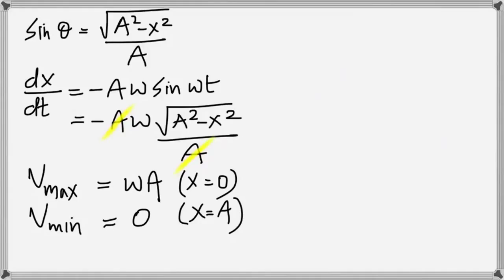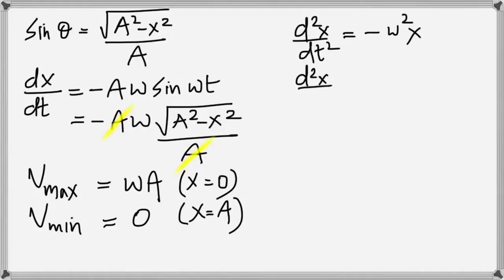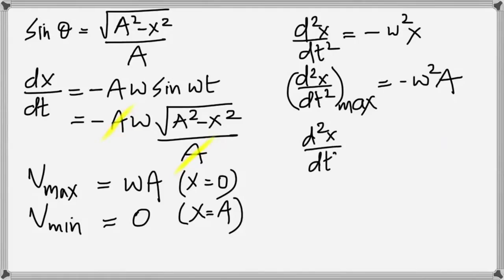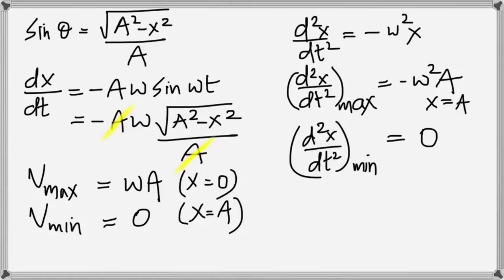For acceleration: d²X/dt² = −ω²X. Put X = 0: acceleration is zero (minimum). Put X = A: acceleration is ω²A (maximum). The maximum for acceleration happens when X = A, yet maximum for velocity happens when X = 0 — they are opposite to each other. When one becomes maximum, the other becomes minimum.